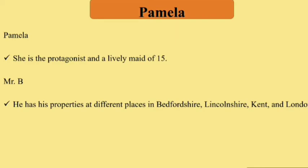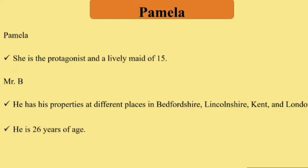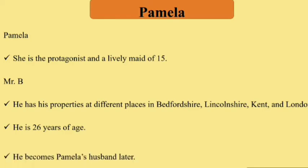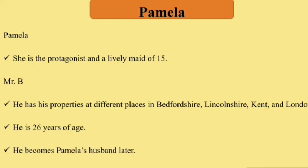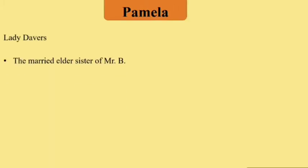Mr. B has properties in four places: Bedfordshire, Lincolnshire, Kent, and London. If you remember these four place names, you can easily follow the storyline. He is 26 years of age and later becomes Pamela's husband.